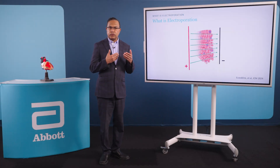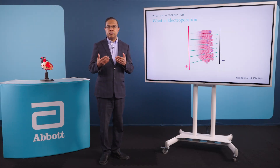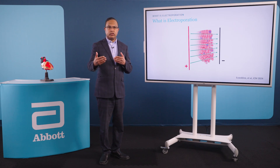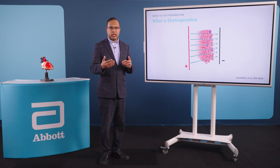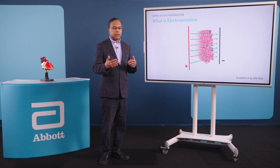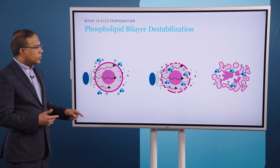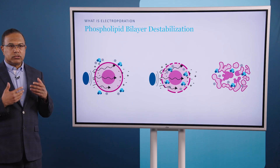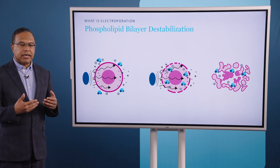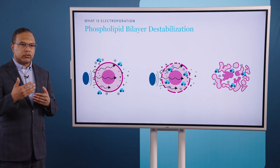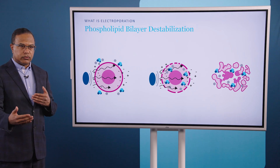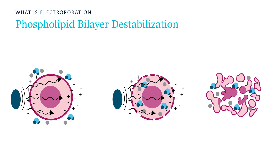Electroporation is really the application of an electrical field across a tissue. That electrical field goes between positive and negative poles, and as it passes through the tissue, it creates a number of cellular changes. In particular, what happens to cardiac cells is that as the electrical field goes through, pores open up in the cell membranes.